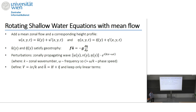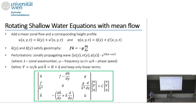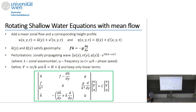We define capital V and H-bar as the total height of the layer. Keeping only linear terms, we can write the resulting equation in matrix form as an eigenvalue problem — a matrix multiplied by a vector equals an eigenvalue multiplied by the same vector. This can of course be solved numerically by methods of linear algebra.